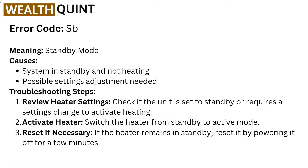Error code SB — meaning Standby Mode. Causes: system in standby and not heating, possible settings adjustment needed. Troubleshooting steps: Review heater settings — check if the unit is set to standby or requires a settings change to activate heating. Activate heater — switch the heater from standby to active mode. Reset if necessary — if the heater remains in standby, reset it by powering it off for a few minutes.